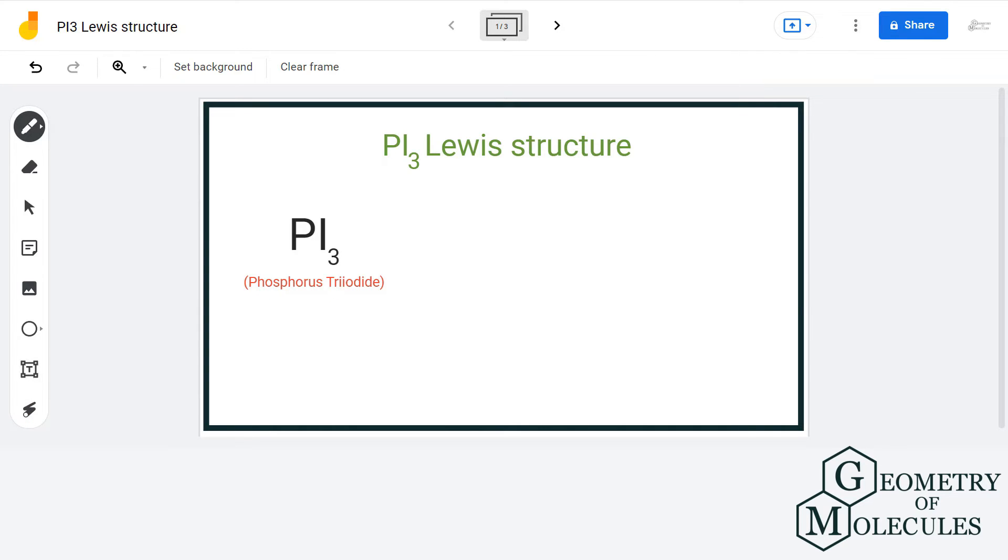For that, let us count the total number of valence electrons. Here, we have 1 phosphorous atom having 5 valence electrons, 3 iodine atoms having 7 valence electrons, and that gives us a total of 26 valence electrons.